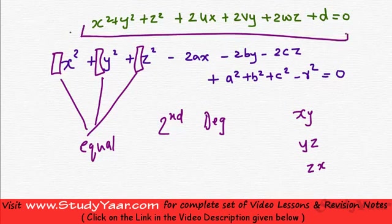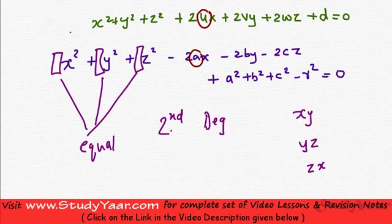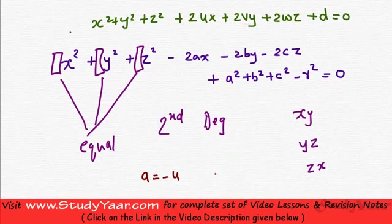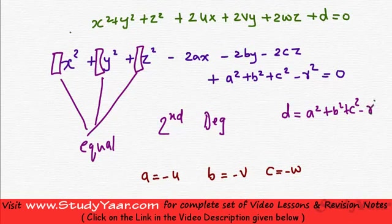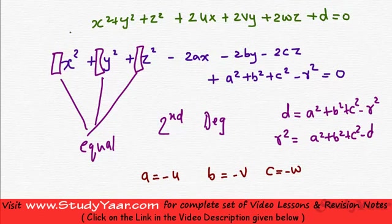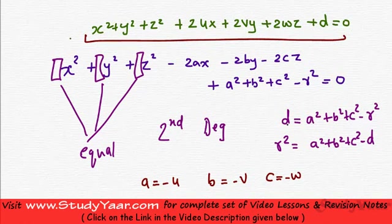And if you have an equation of this type, then comparing it with this particular equation, you realize that a is equal to minus u, b is equal to minus v, and c is equal to minus w. Another thing you realize is your constant d is equal to a square plus b square plus c square minus r square. Or in other words, r square is equal to a square plus b square plus c square minus d. So a general equation of this type specifies a sphere.